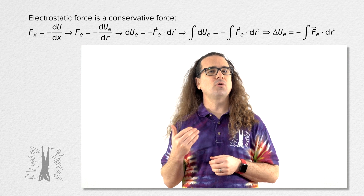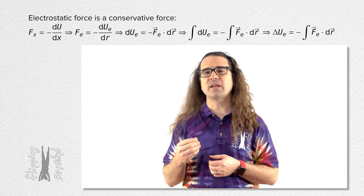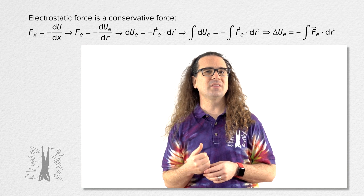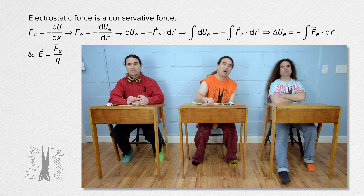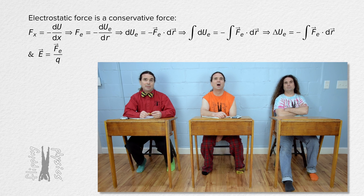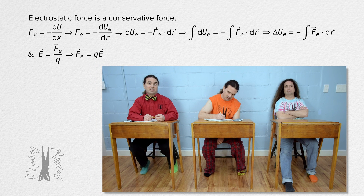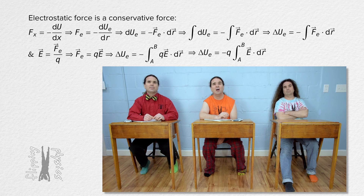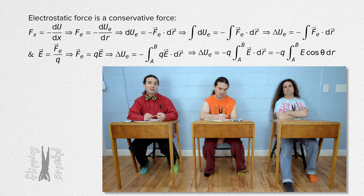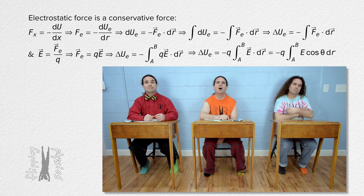The electric field equals the electric force divided by charge. That means the electric force equals the charge times the electric field. We can substitute that back into the electric potential energy equation. We can assume the charge in the electric field is constant, so we can take charge out from under the integral. And we can have either the dot product version of the equation, or the one without vectors using the cosine of the angle between the direction of the electric field and displacement dr instead of vectors.